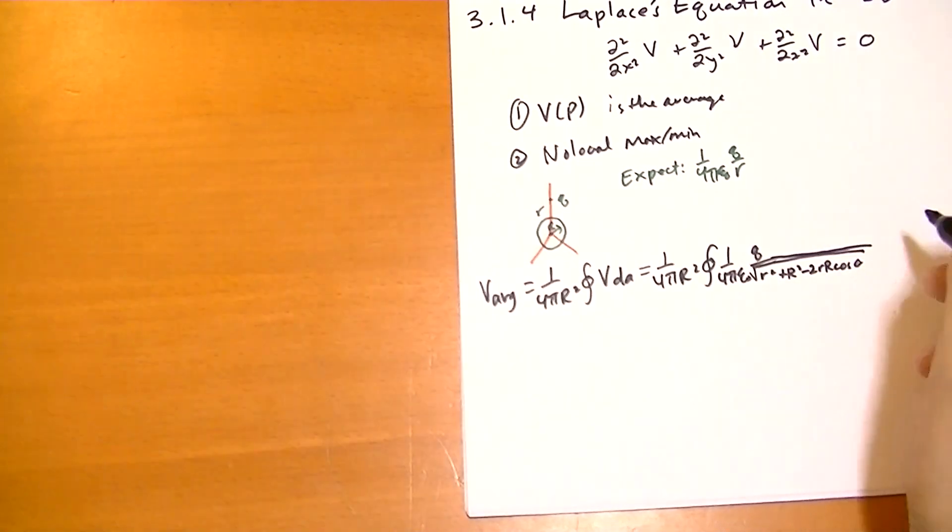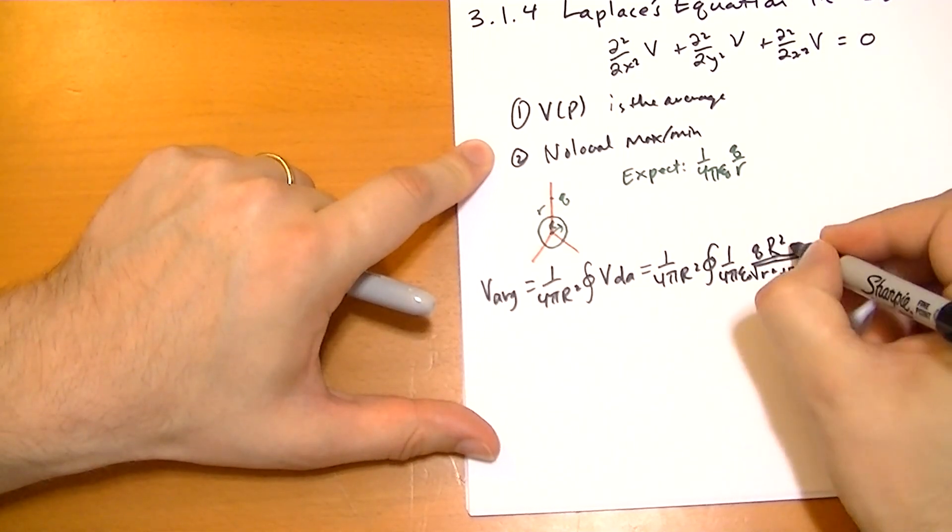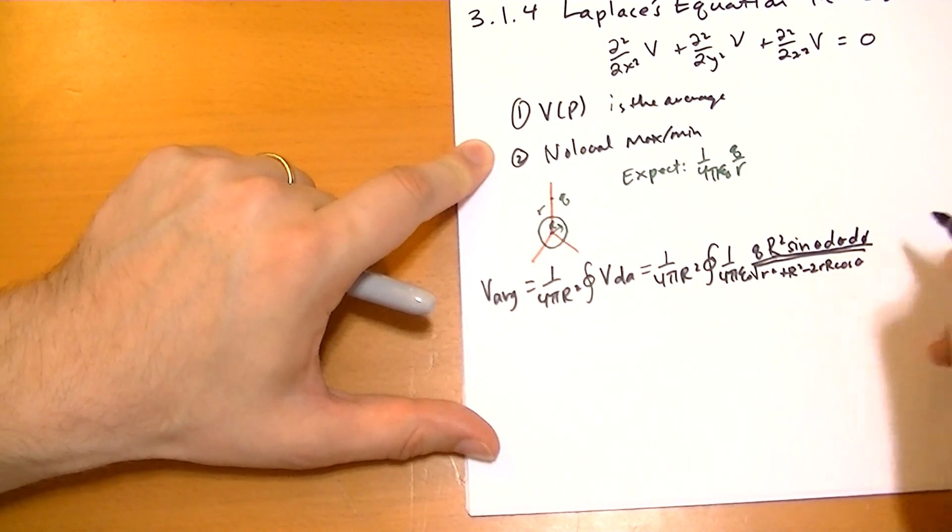And the dA in spherical coordinates is the radius squared sine theta d theta d phi. The next step we're going to do is we're going to bring out some terms.